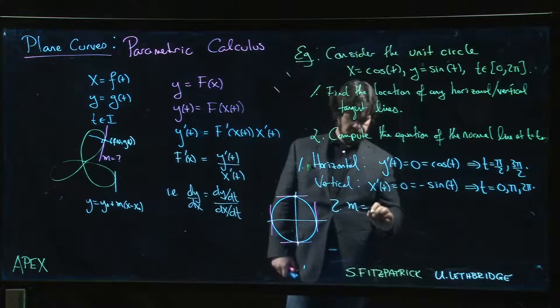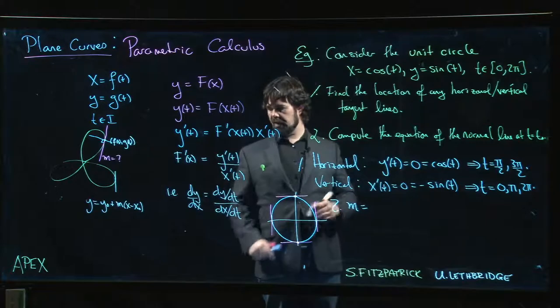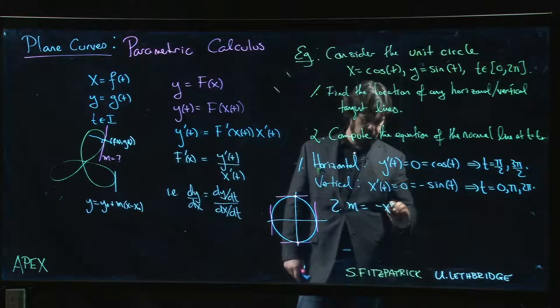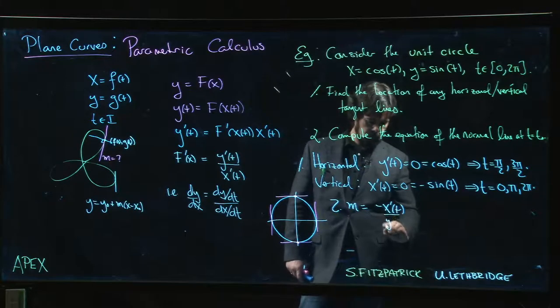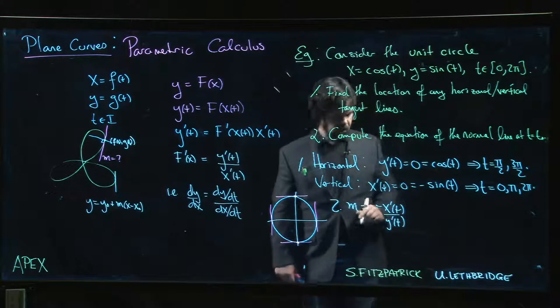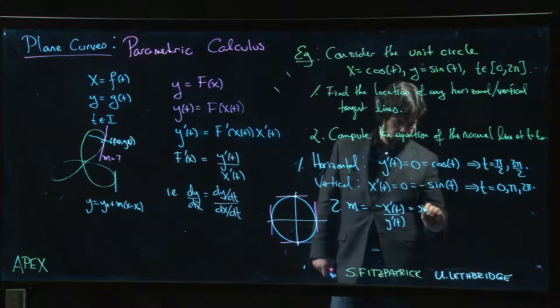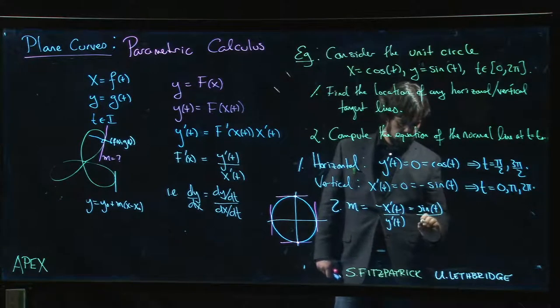So the tangent line has slope y'/x'. The negative reciprocal, the normal line, should be -x'/y', which is -(-sin t)/cos t, so we get tan t.